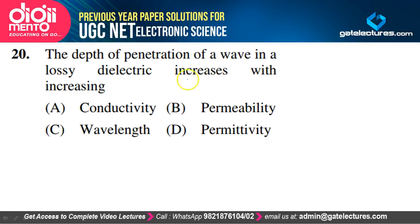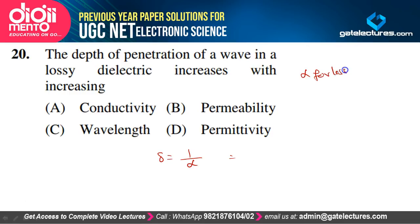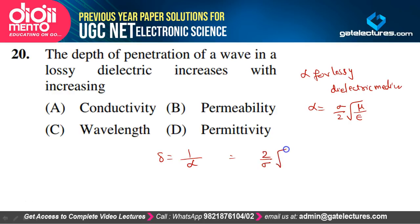The depth of penetration (skin depth δ = 1/α) in a lossy dielectric: for a lossy dielectric, α = (σ/2)√(μ/ε), so δ = (2/σ)√(ε/μ). Therefore delta increases with an increase in permittivity. Option D is correct.